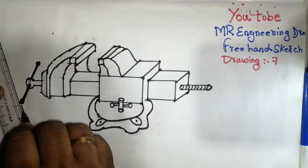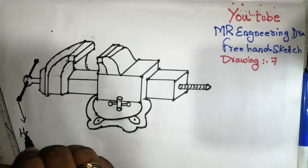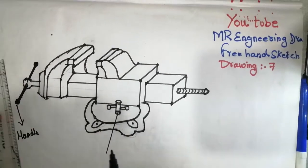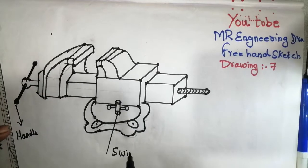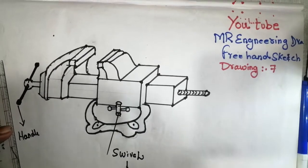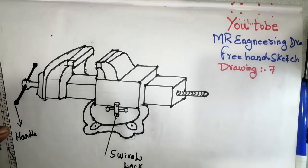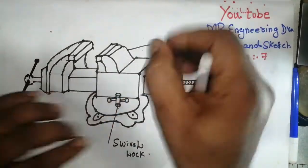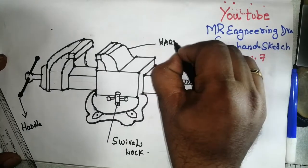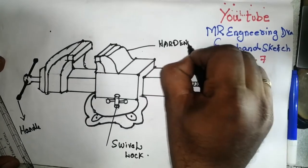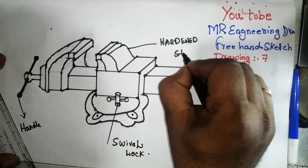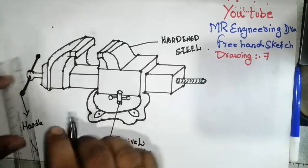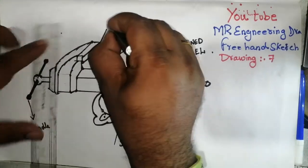This is the sliding lock. This is made by hardened steel. The body is made by cast iron. This is called the jaw.